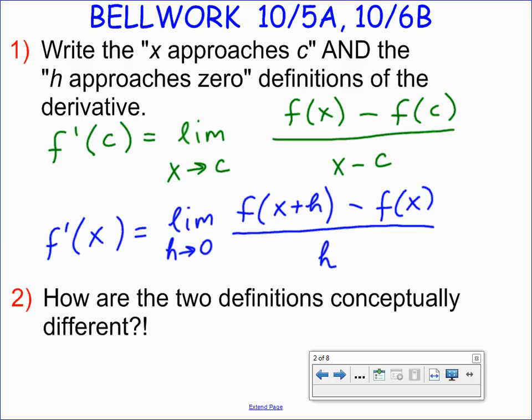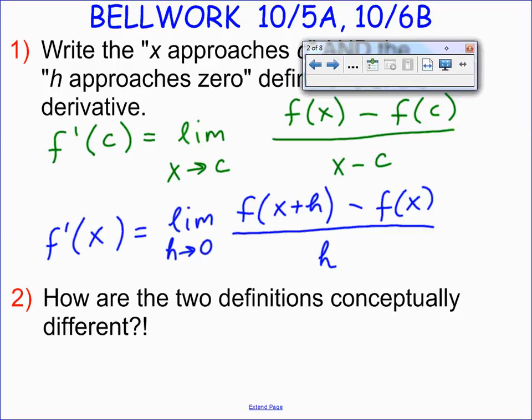So how are these definitions conceptually similar? How are they different? They both involve that same sort of limit expression. We've got this difference quotient in each case. But how are they conceptually different? Riley? That x approaches c will find the derivative at a value of the function, but the h approaches zero will find the entire equation for the derivative function. Yeah, absolutely.